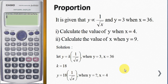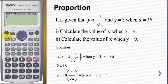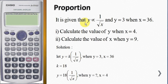In this video, I will show you how to solve a proportion question using the solve function in Casio fx-570EX. It is given that y is directly proportional to 1 over square root x, and y equals 3 when x equals 36.